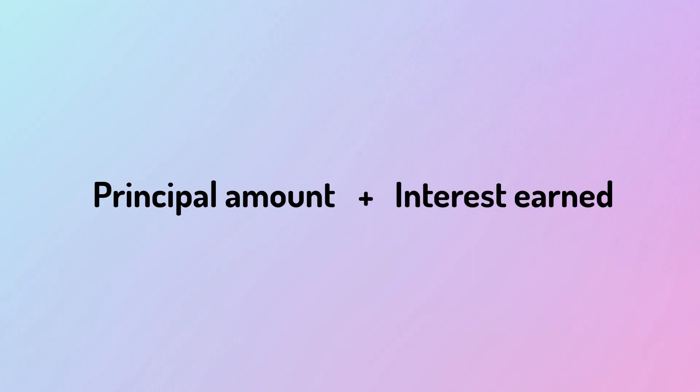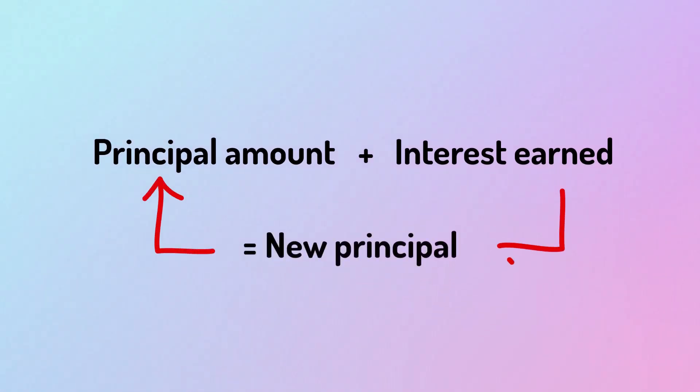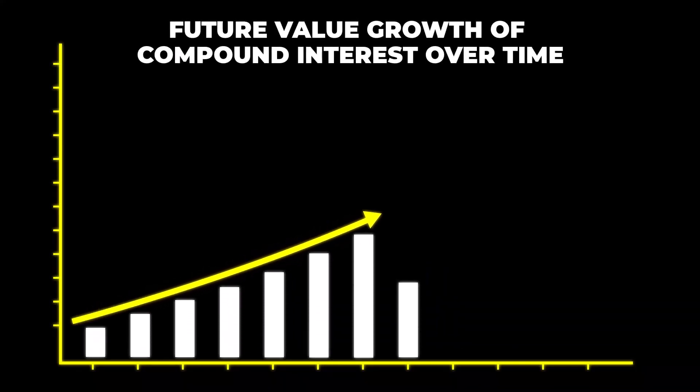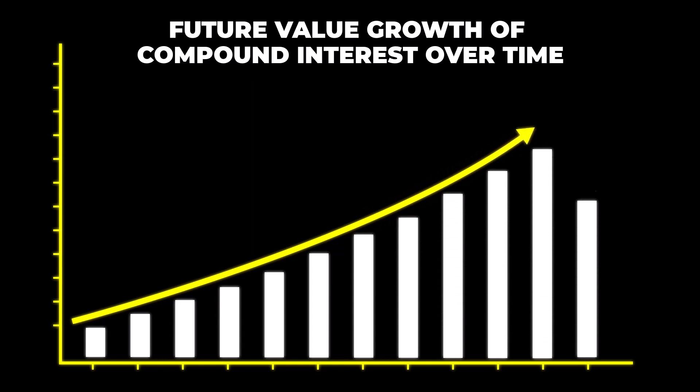Compound interest works by taking your initial principal amount, then adding the interest earned on that amount over one period and repeating this process for each compounding period. This results in your investment growing exponentially since the interest accrued is added to the principal after each period, creating a larger base for future interest calculations.